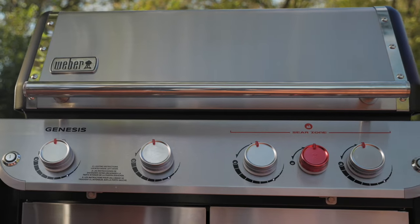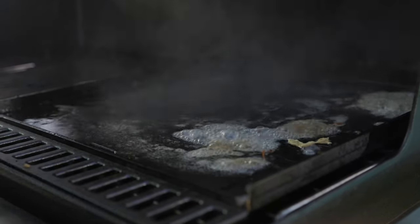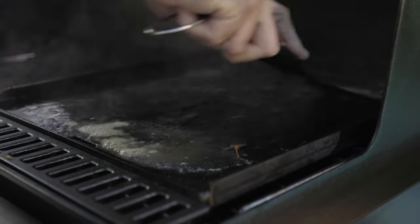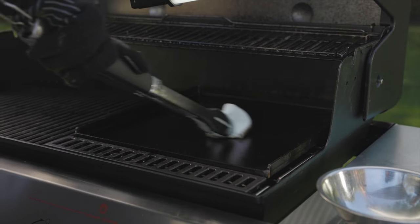When done cooking, turn your burners off. With the flat top still warm, pour a little bit of water on the surface. Then use a spatula to scrape away food residue. Rub a few drops of cooking oil on the entire surface with a paper towel before storing.